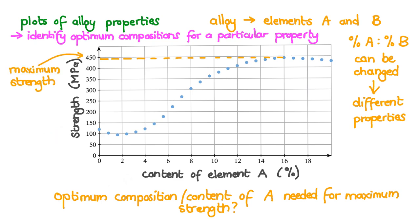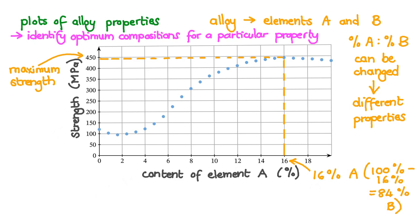So what is the optimum composition or content of element A needed for maximum strength in this alloy? Well, the maximum strength is the highest point on the curve. In this case almost 450 MPa. Going down to the corresponding point on the x-axis, we see that a content of 16% of the element A is needed to achieve this maximum strength in the alloy. And if we say 100% minus 16%, we get 84% being the content of element B needed to achieve this maximum strength.